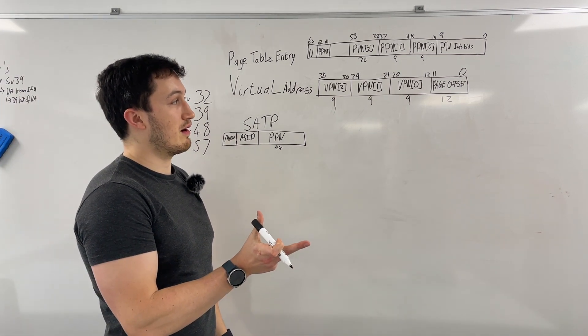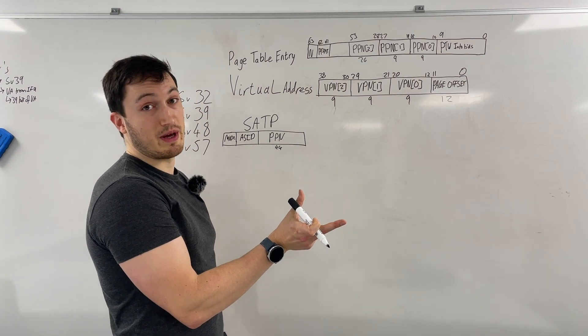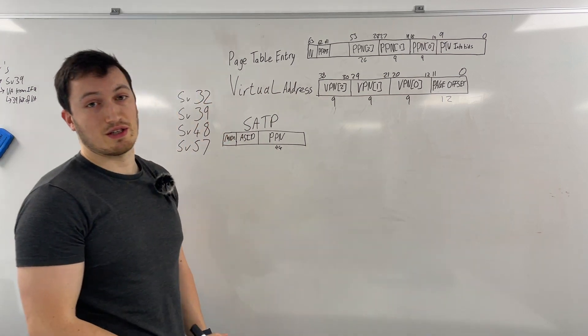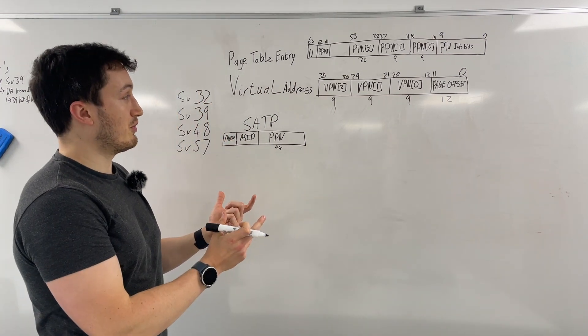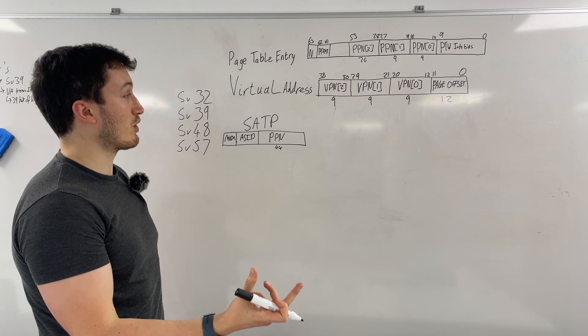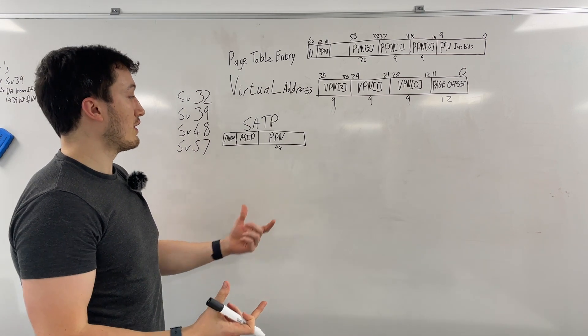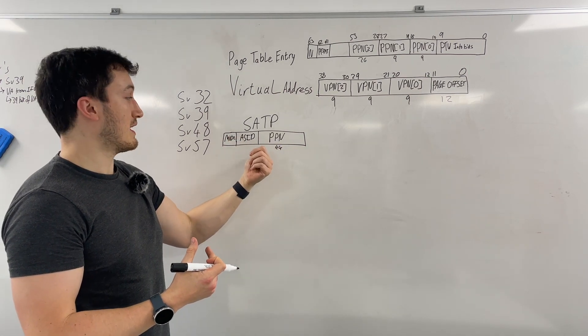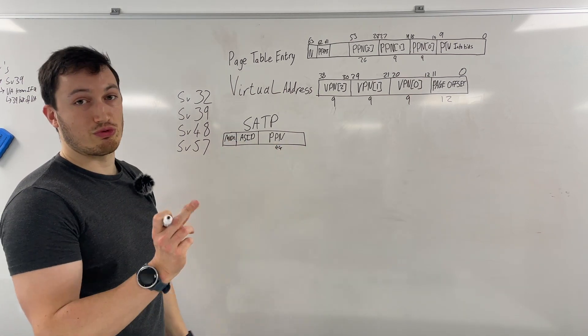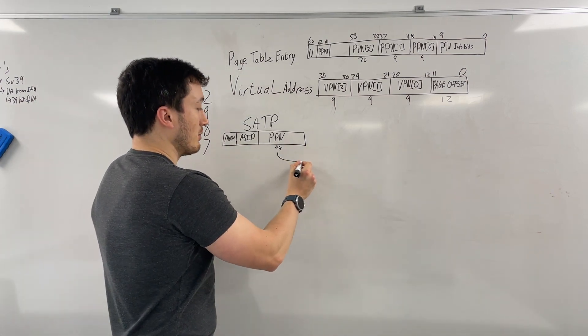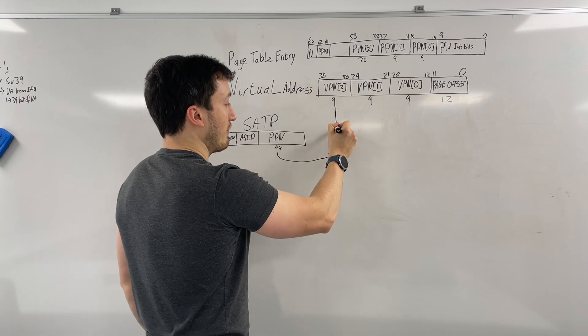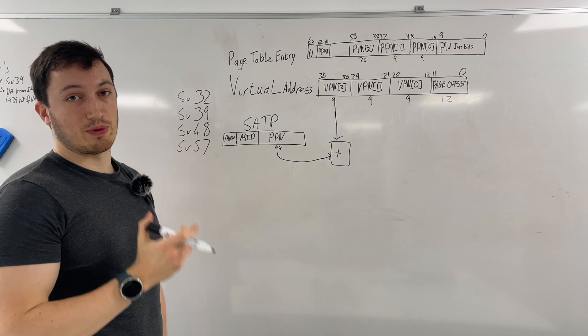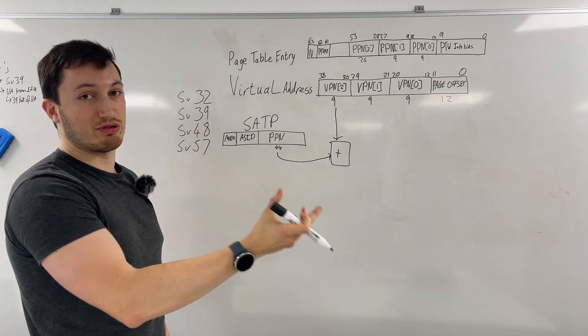So when there is a virtual address which comes from the IFU or the DCU, then it will come like this and that means there's 39 bits of virtual address. Within the MMU, within the page table walker, whenever we're doing a translation, what we can do is we can take a PPN, which stands for physical page number, from the CSR unit, which will point to the root of the page table in memory. We take that number and we take the top nine bits of the virtual address, add it together, and then we'll have a physical address, which we can then send to memory to retrieve a page table entry.